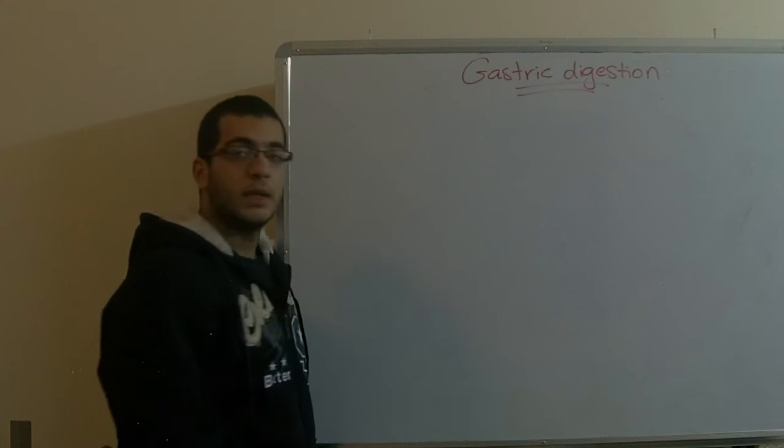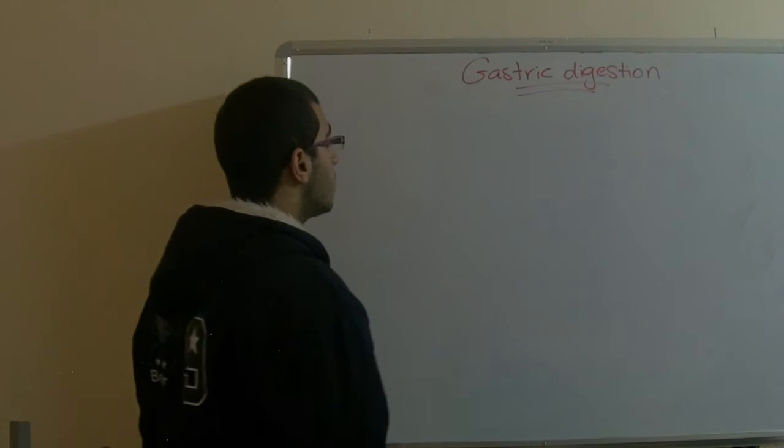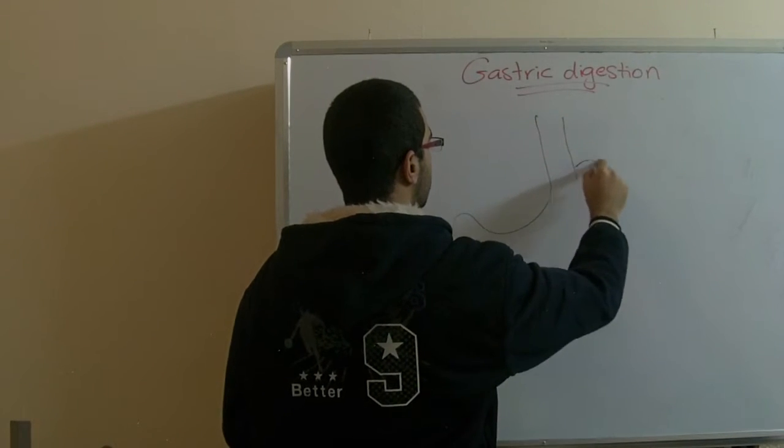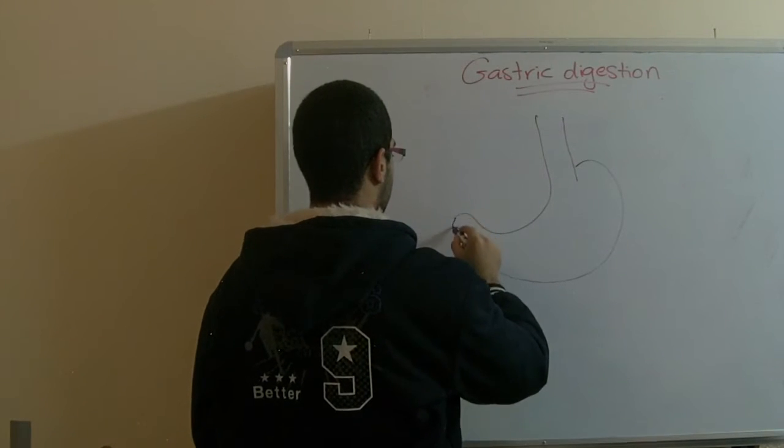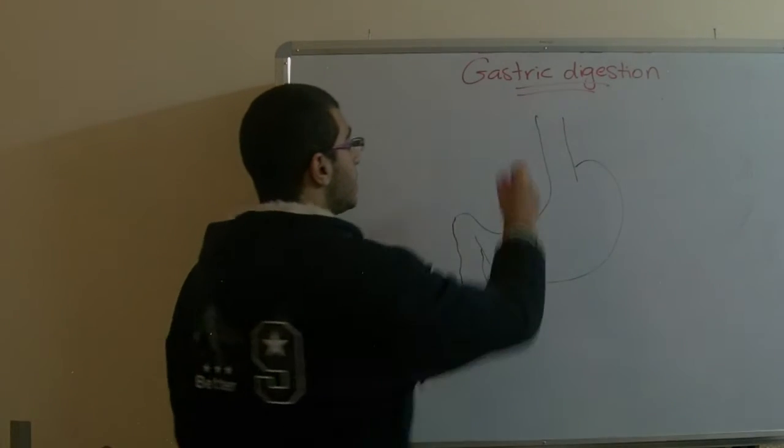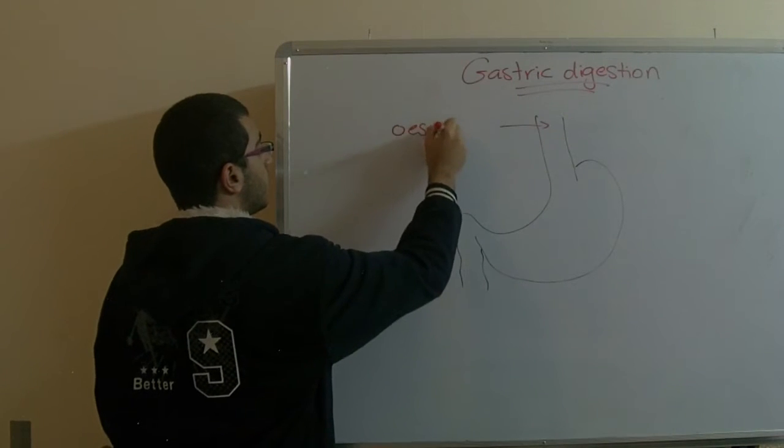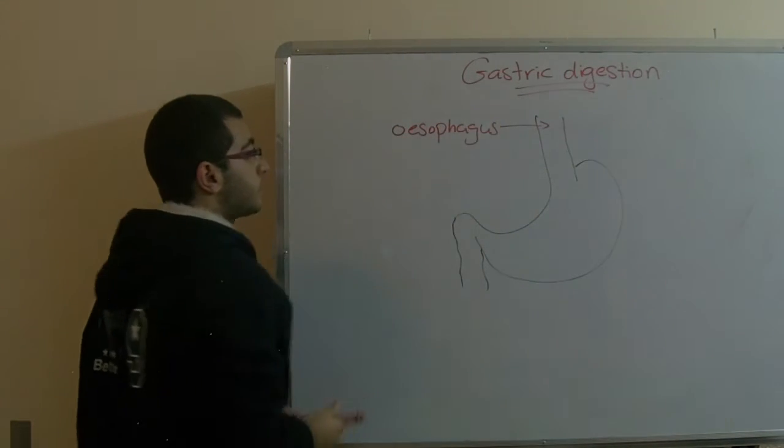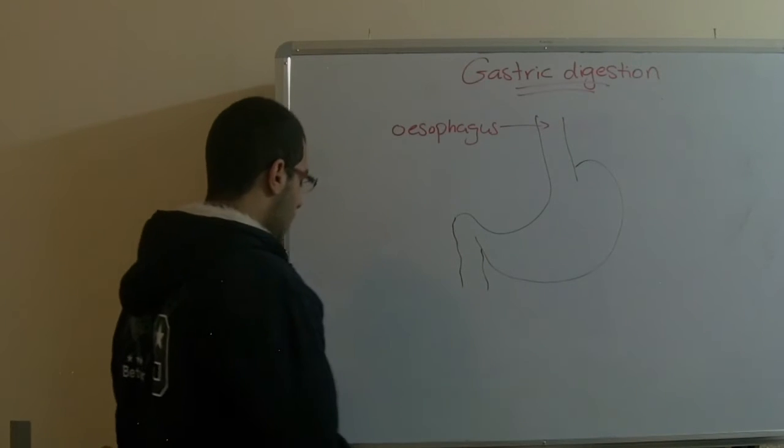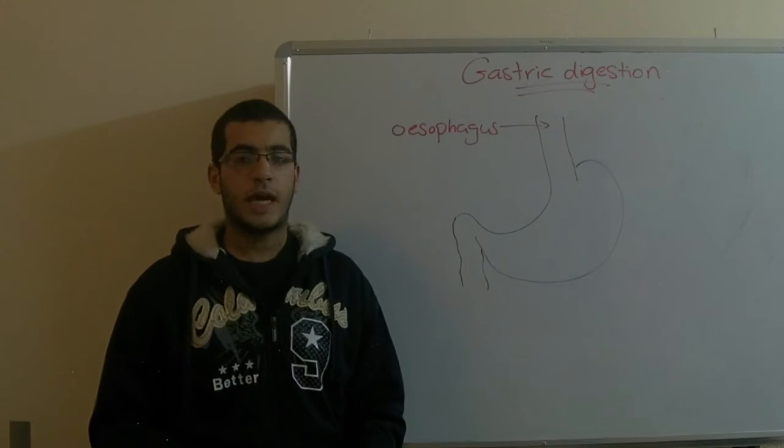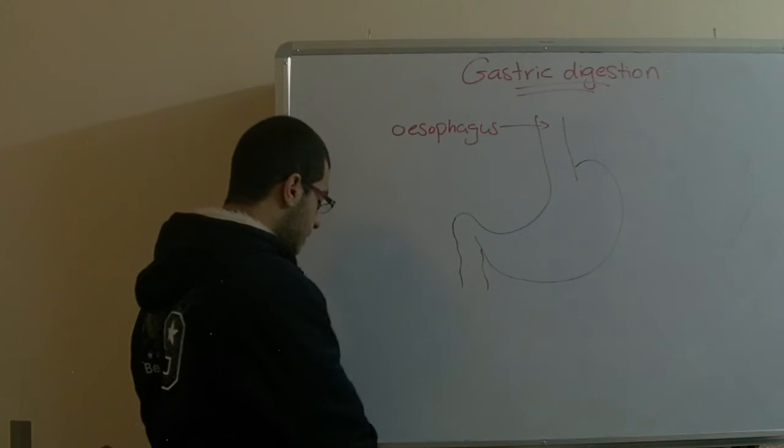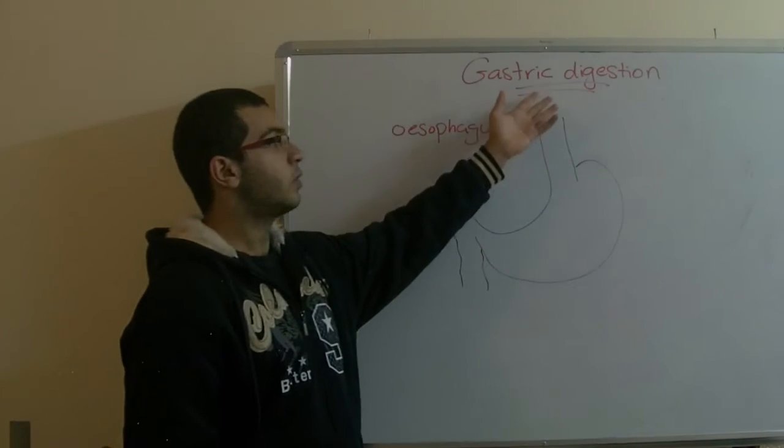And of course we will talk about the stomach. So first we will draw the stomach. This is the esophagus. The food descends from the esophagus to fall into the stomach. The stomach is a dilated muscle sac found in the abdominal cavity of the body, or the gastric region. So our part today is called the gastric digestion.